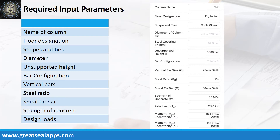Enumerate input parameters required: column name C7, floor designation footing to second, shape and ties circle spiral, steel covering 62.5 mm, unsupported height 3,000 mm.